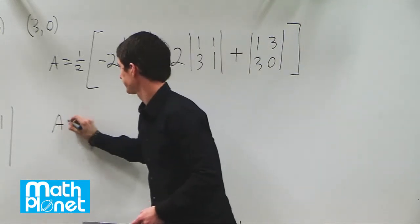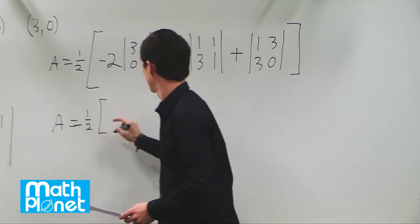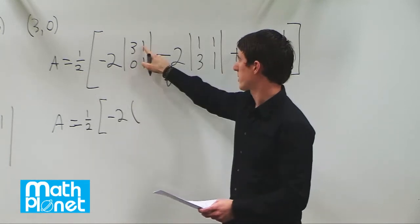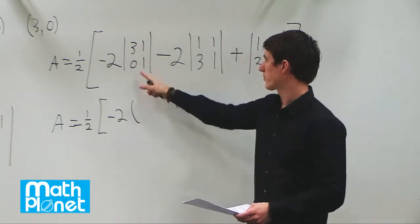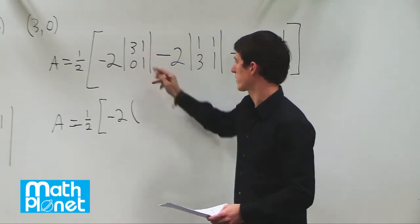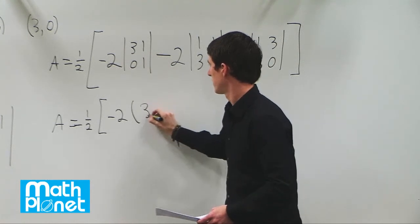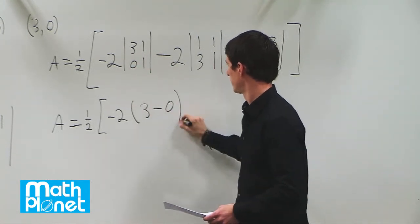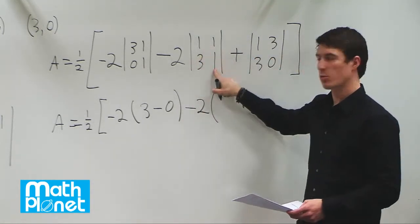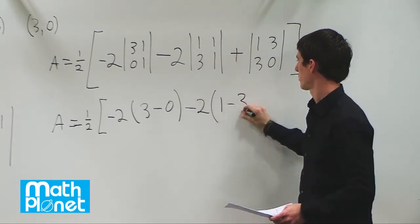So this becomes negative 2 times this times this minus this times this. That's the same method we're going to use for each of these second order determinants. So this times this minus this times this. So 3 times 1 minus 0 times 1. So minus 2, now we have 1 times 1, minus 3 times 1, minus 3.